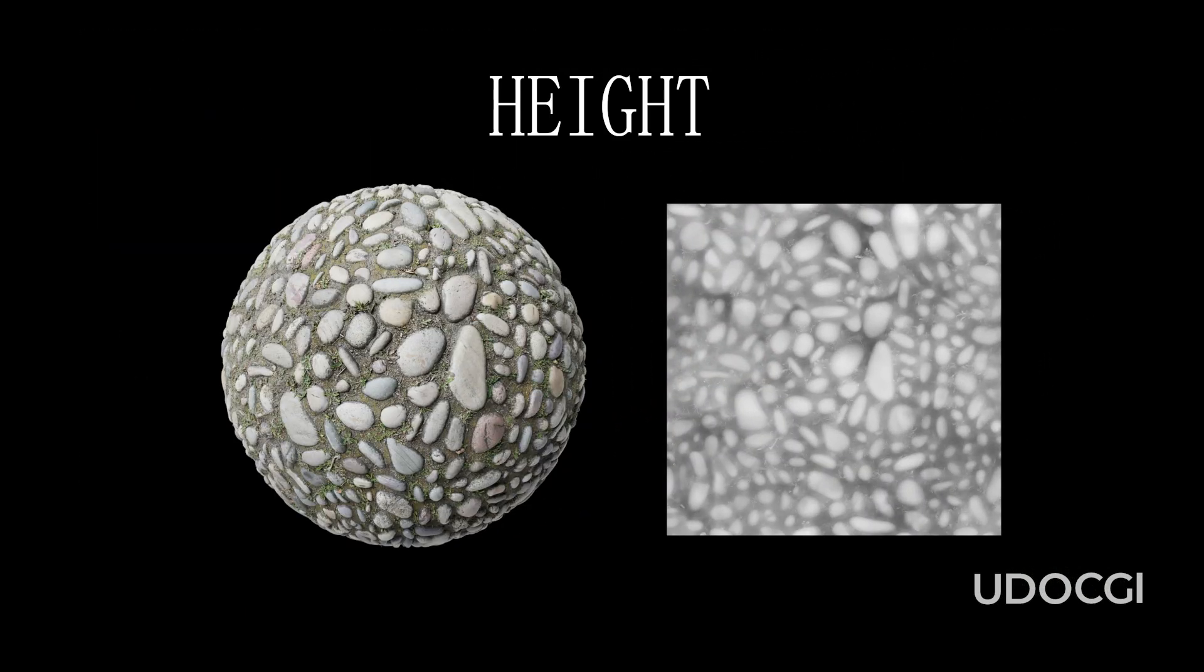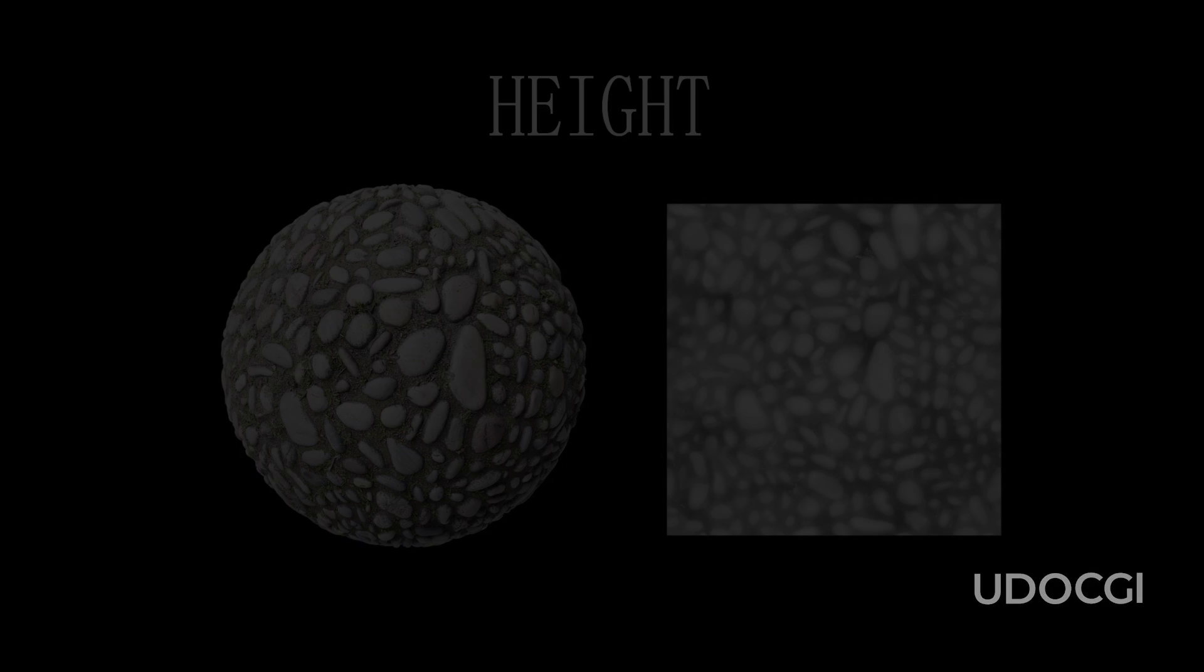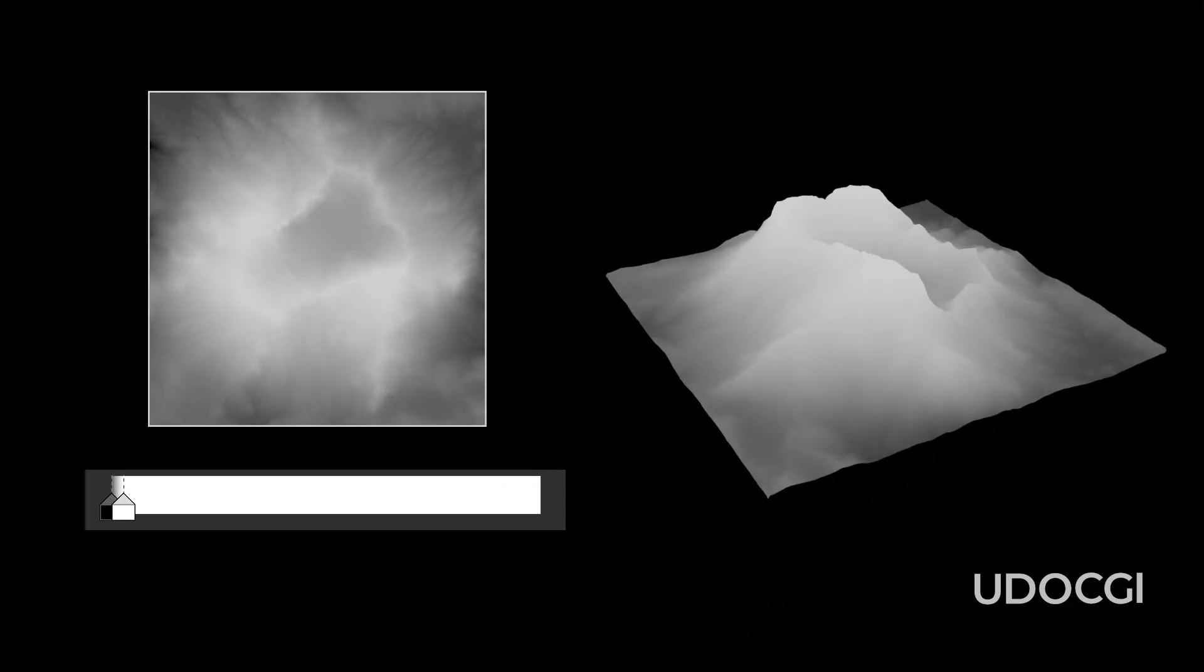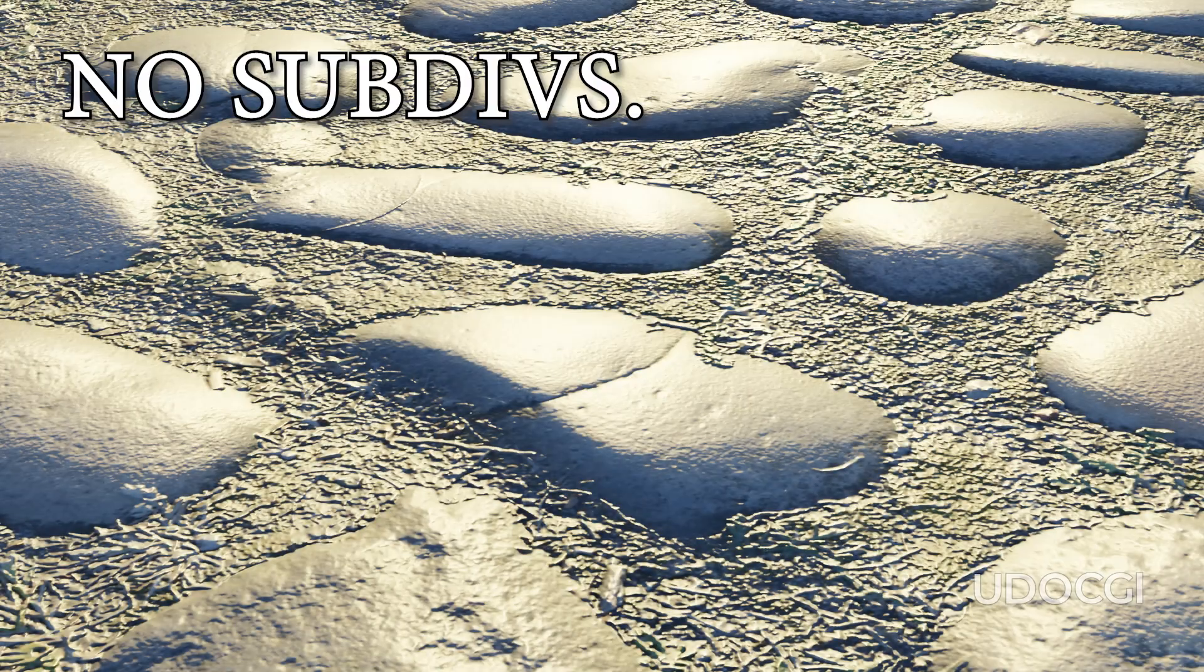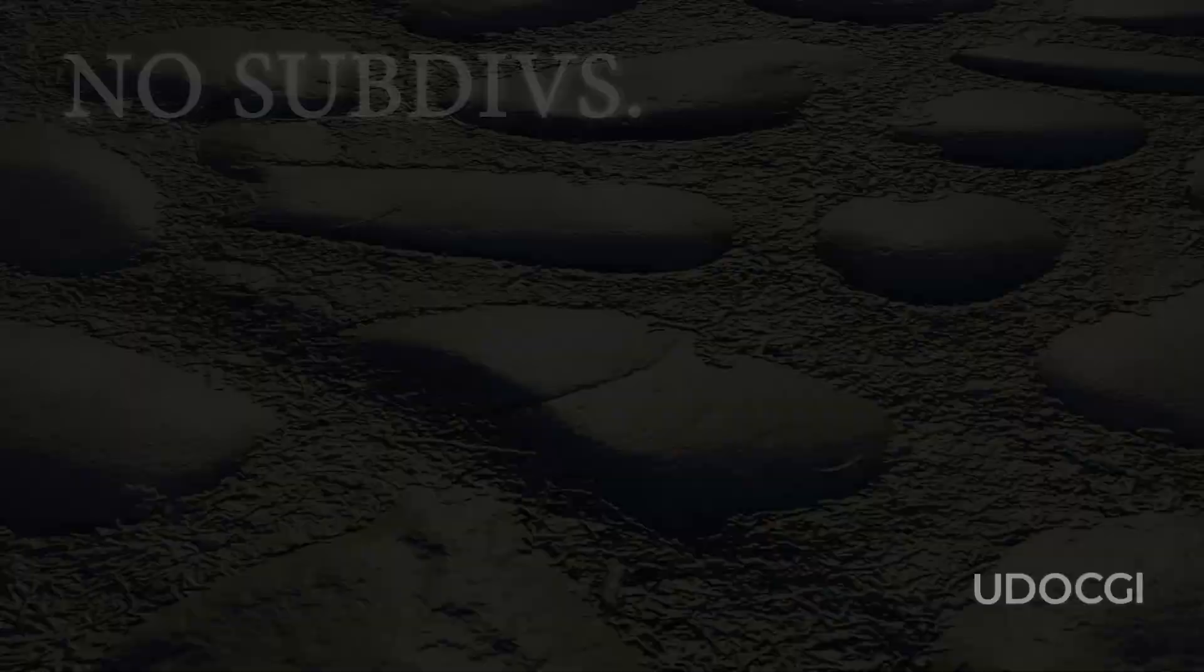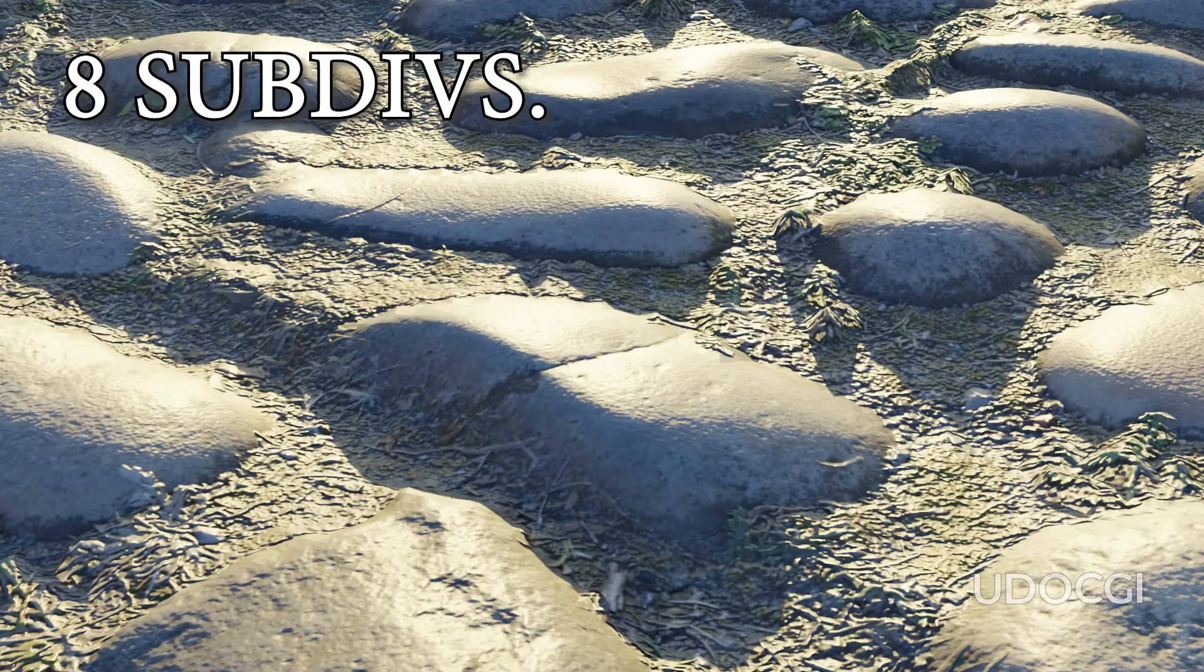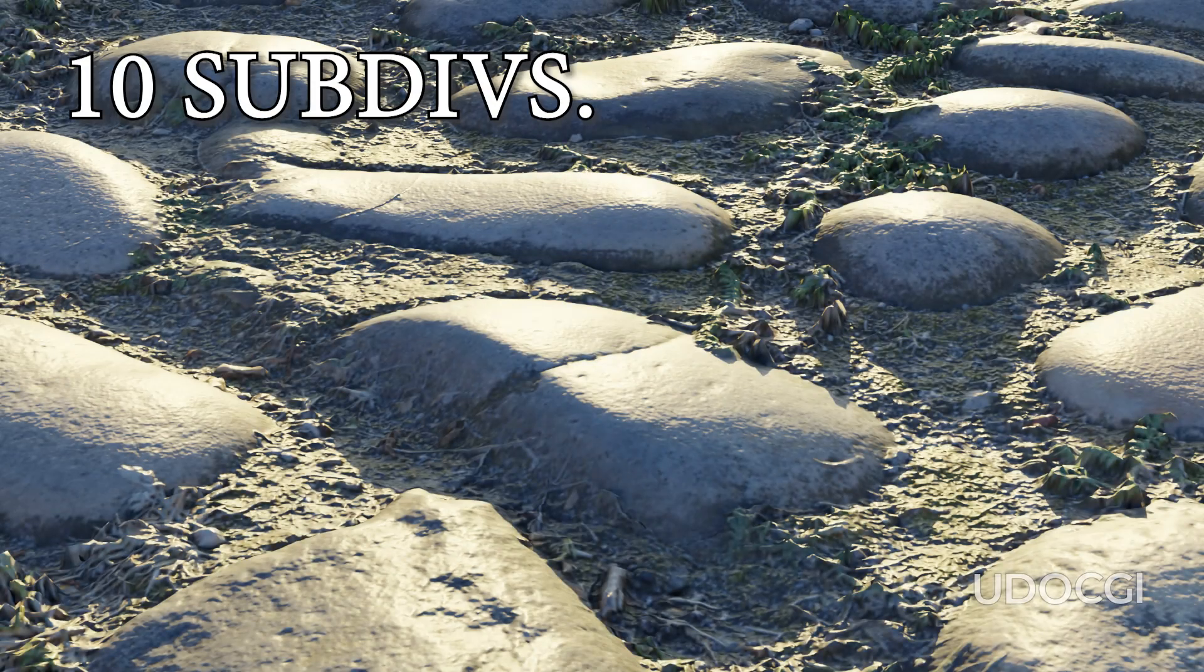A height map, also known as a displacement map, adds physical texture to a surface by simulating elevation changes. It uses grayscale values to push or pull the surface geometry. White areas are pushed up, black areas are pushed down, and shades of gray represent elevations in between. Height maps add significant detail to surfaces but can be performance-intensive because the level of detail depends on the mesh's geometry. More geometry allows for finer detail but increases rendering times.